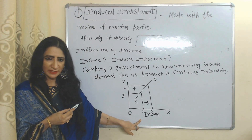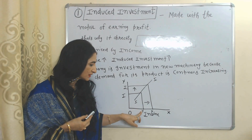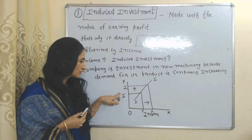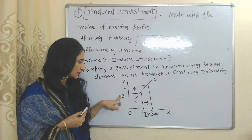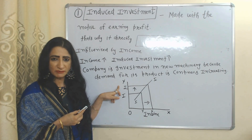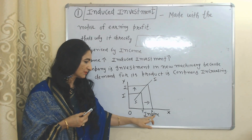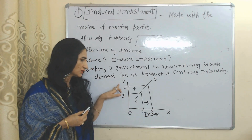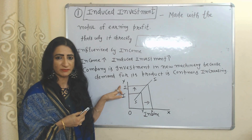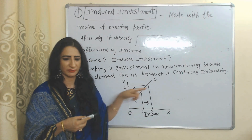On the x-axis we have income, on the y-axis we have investment. As income increases from Y to Y1, induced investment also increases from I to I1. So we can say that induced investment and income have a direct relation, because the motive of induced investment is earning a profit. This is the induced investment curve.